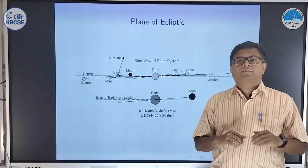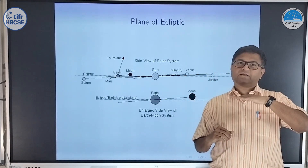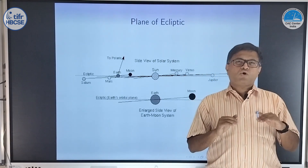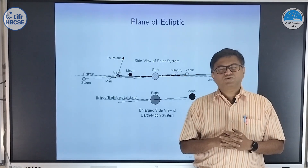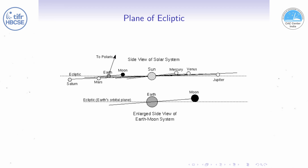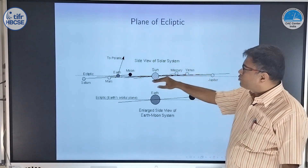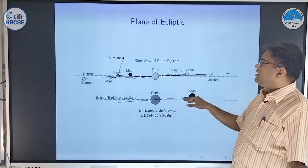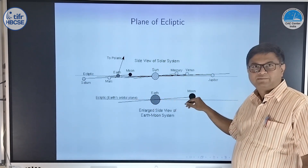If you look at the plane of ecliptic, that is the mean of Earth's orbital plane around the sun, we realize that almost all planets have orbits in similar planes — almost the same plane. You can see here, for example, this dashed line is the ecliptic, that is the Earth's orbital plane, and all the planets are always very close to this plane. Sometimes in extreme cases they can be slightly off; even the moon is nearly in the same plane, slightly off sometimes.